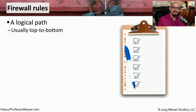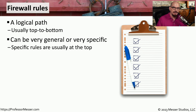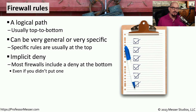Most firewall rules start at the top of the rule base and evaluate each rule individually until a match is found. This means we usually put more specific rules at the top so they can be recognized quickly, while more generic or broad rules go lower down in the list. Most firewalls also include an implicit deny as part of the rule base — it steps through each rule from top to bottom, and if no rule matches, everything without a specific match is automatically denied once it reaches the bottom of that list.